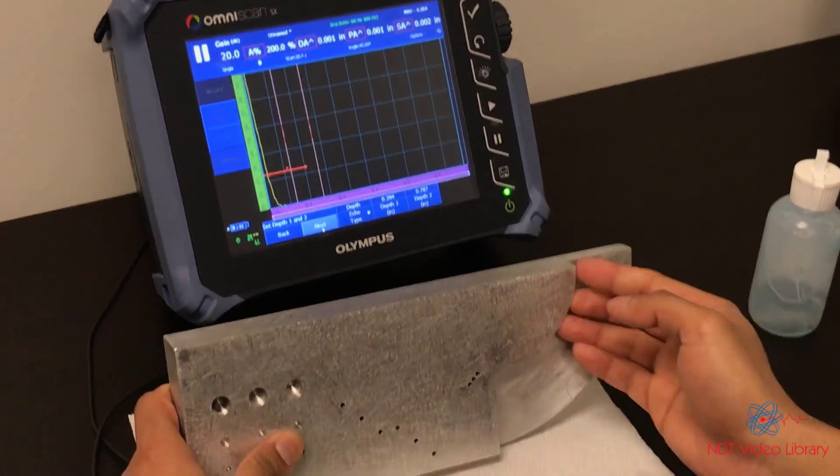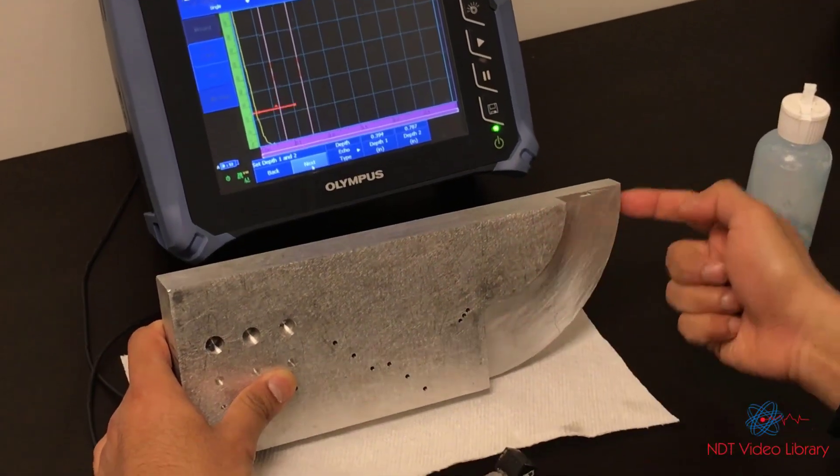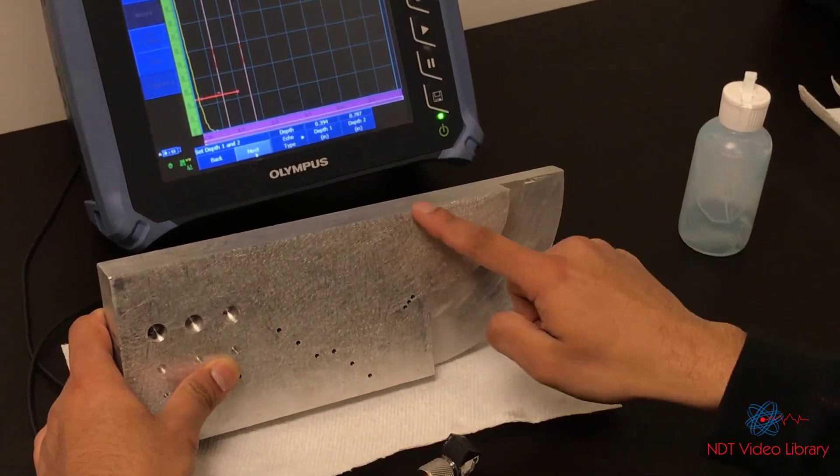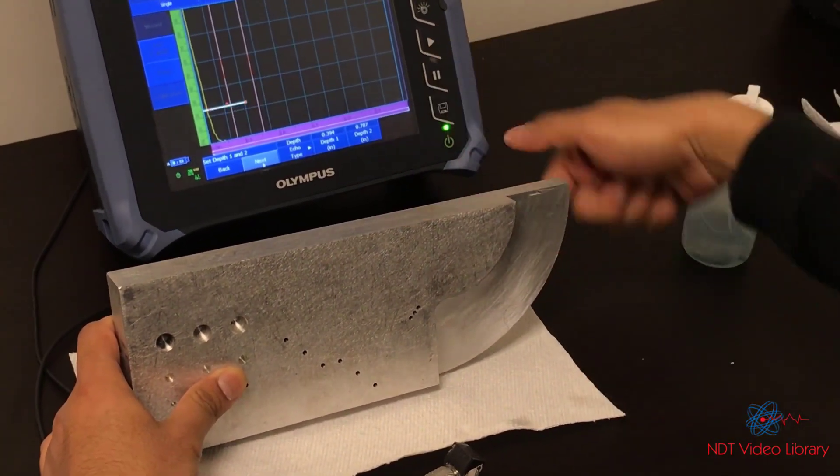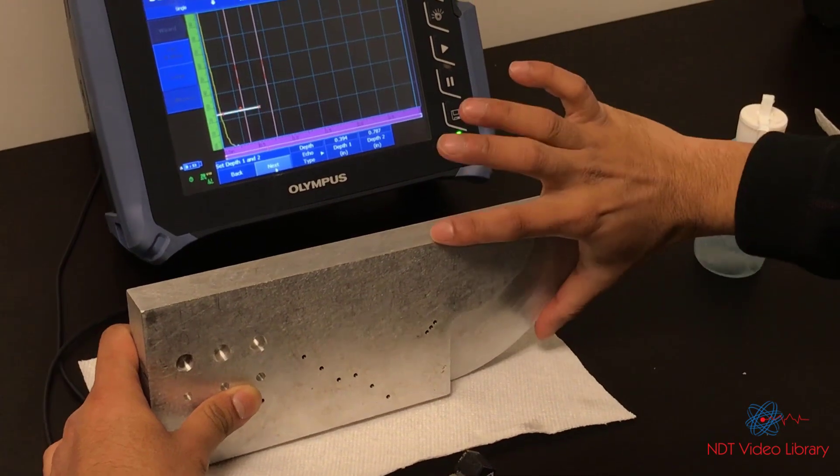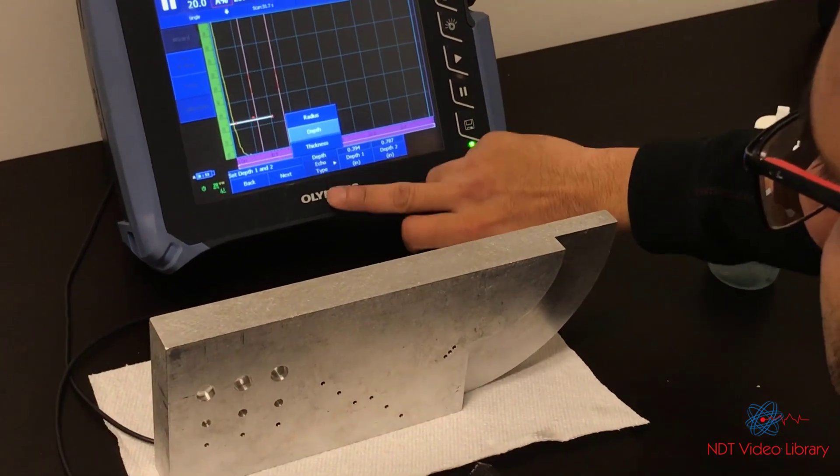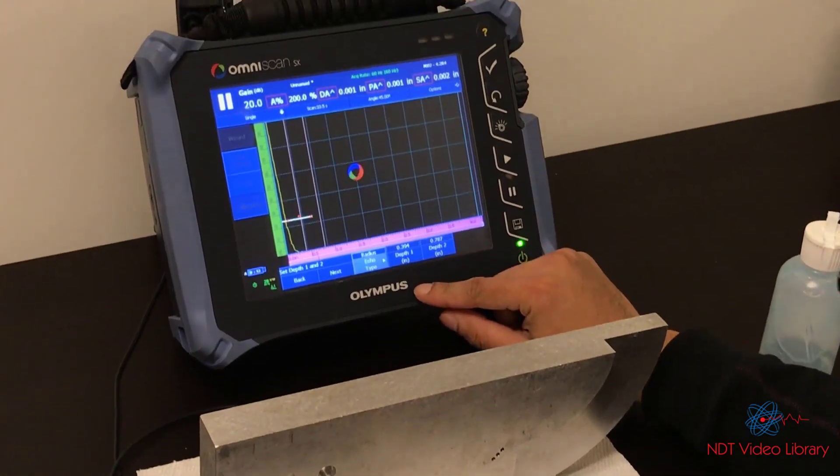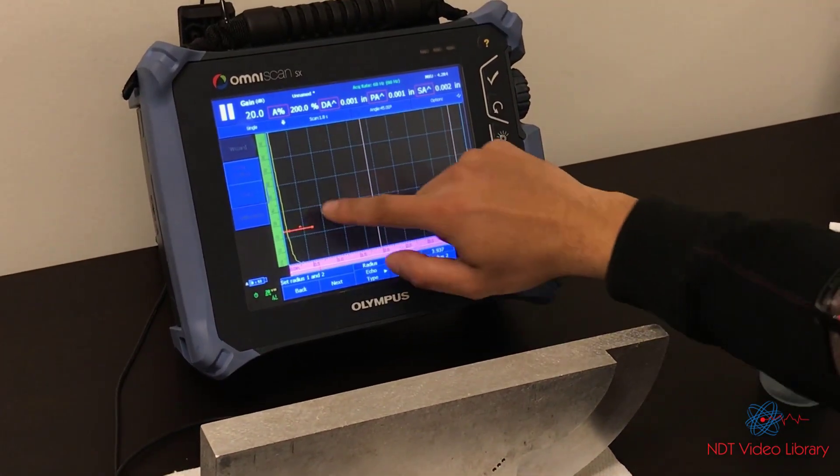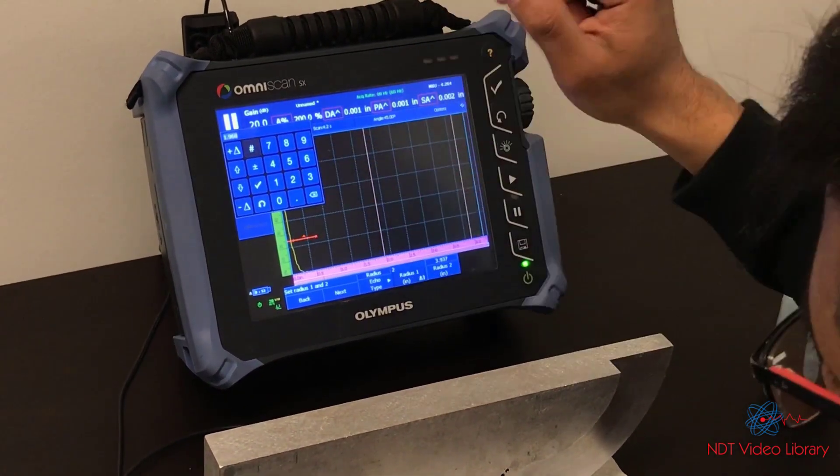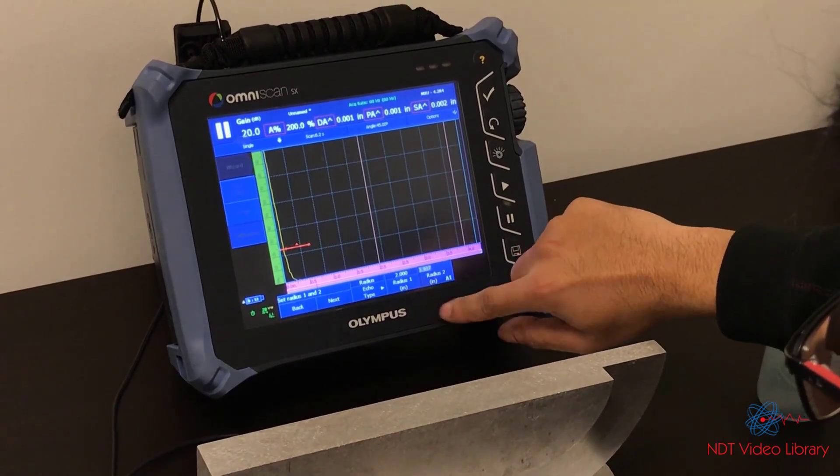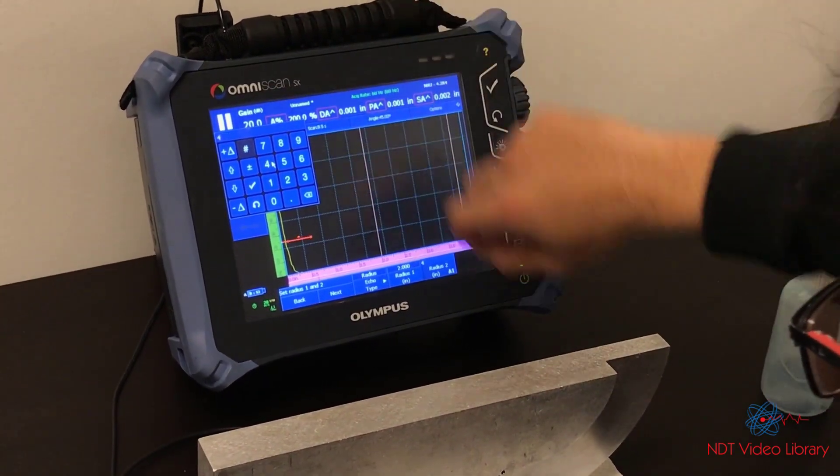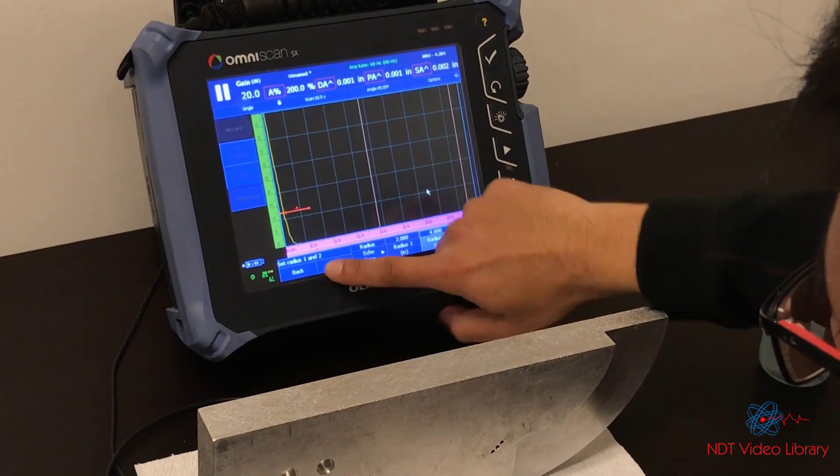Now the reflector type that we're going to choose in this type of block is these two radii. Radius 1 and radius 2 at the back. This is 2 inch and this is 4 inch. So echo type is radius. Radius 1 would be 2 inch and radius 2 would be 4. Next.